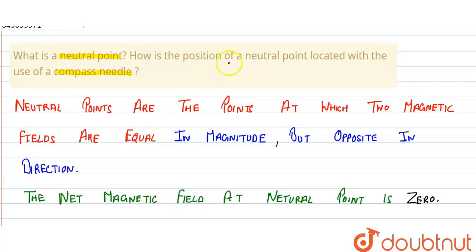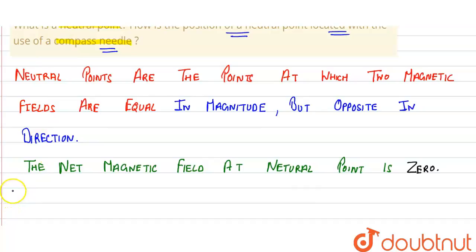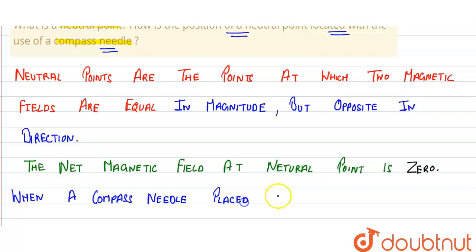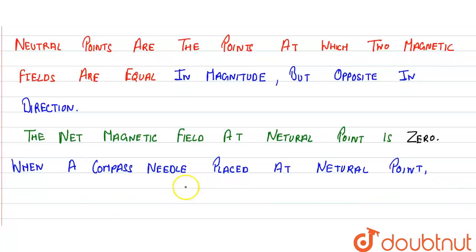In the question, we are further asked how the position of neutral points is located with the use of a compass needle. When a compass needle is placed at a neutral point, it will come to rest at any direction.